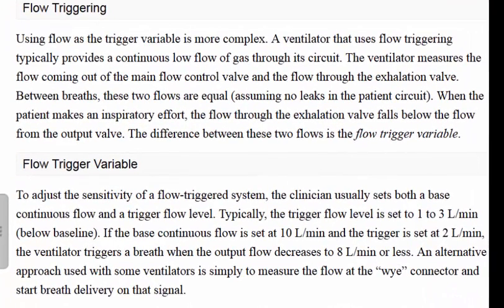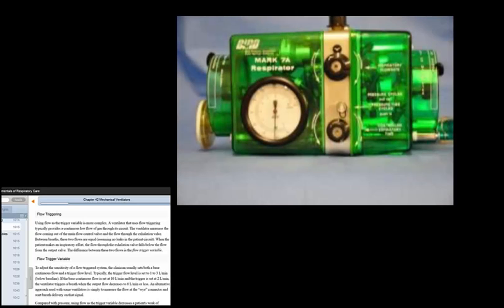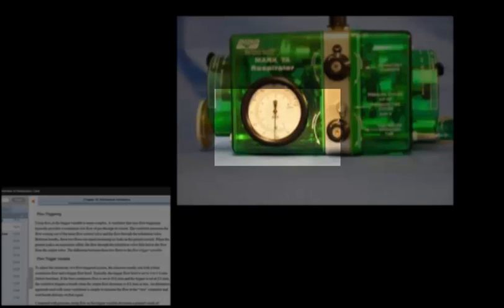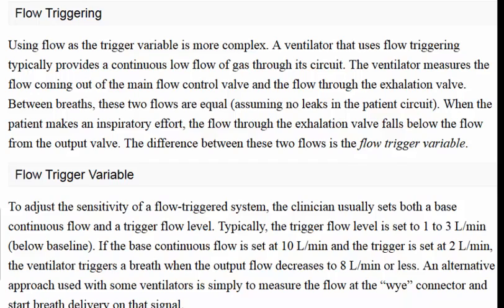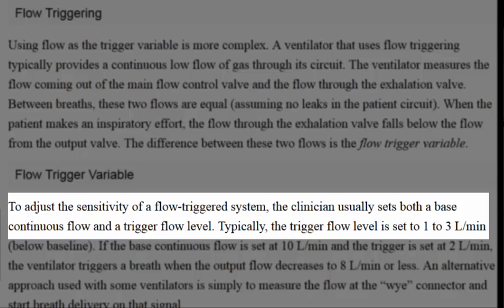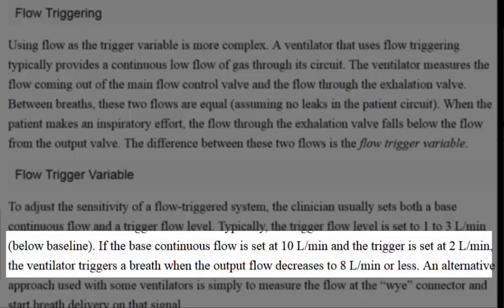Flow triggers are becoming more and more popular on machines simply because they are more sensitive to the patient's effort. They work a little differently than the pressure trigger. In flow triggering, the clinician usually sets both a base continuous flow and a trigger flow level. Typically, the trigger flow is set at one to three liters per minute below baseline. If the base flow is set at 10 L/min and the trigger is set at two, the ventilator triggers a breath when output flow decreases to eight liters per minute or less.